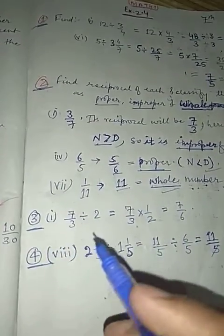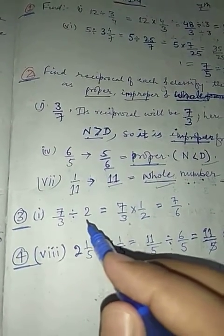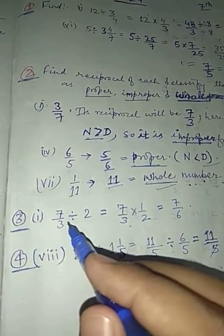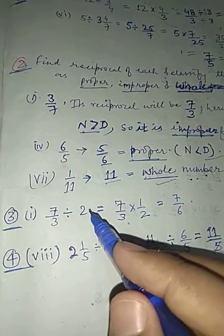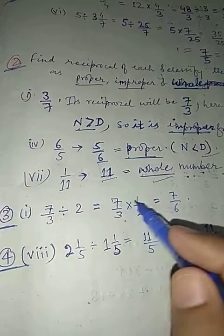Question number three: 7 upon 3 divided by 2. Here fraction is given, dividing by 2. So you do the same: 7 upon 3 into reciprocal, which will be 1 upon 2. 7 times 1 is 7, 3 times 2 is 6, so 7 upon 6.